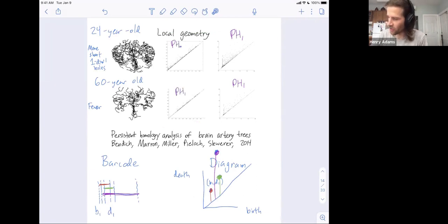And you do see that there are a lot more points close to the diagonal in the 24 year old brain than there are in the 60 year old brain. So this hypothesis actually checks out. You have more short one dimensional holes in the 24 year old brain, which give you all these points in the persistence diagram near the diagonal. And you have fewer in the 60 year old brain.